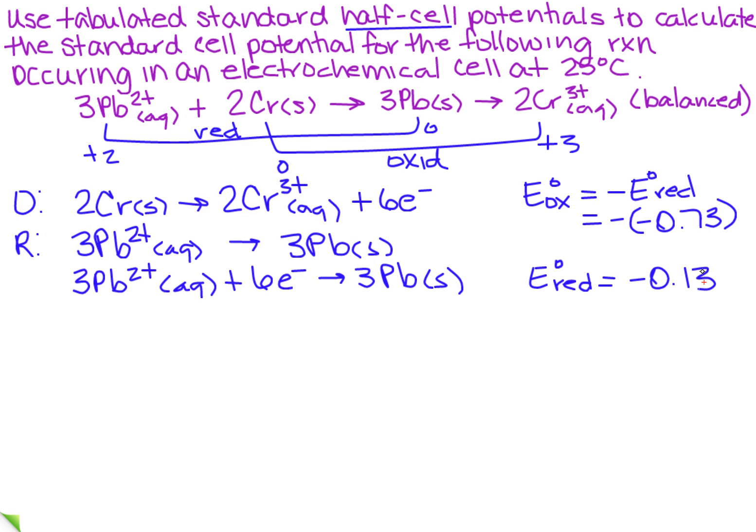So what does that mean that we're going to do? Well, we're going to find it for the cell. That's what it asked for. So I've got E of the cell is going to equal to E of the oxidation plus E of the reduction.